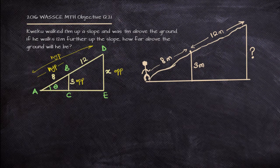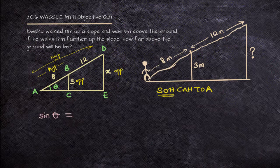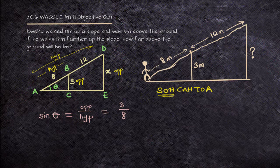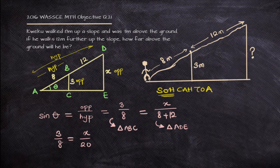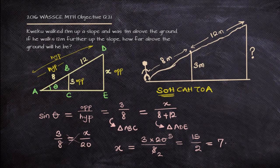Relating our trigonometric function — the formula relating opposite and hypotenuse is sine. So sin theta equals opposite over hypotenuse. In the first case (triangle ABC), the opposite is 3 and the hypotenuse is 8. In the second case, since it is the same angle, the opposite is x and the hypotenuse is 8 + 12 = 20 (triangle ADE). Cross-multiplying, x equals 3 times 20 divided by 8, which gives 15 over 2, or 7.5 meters.